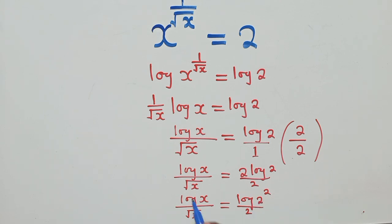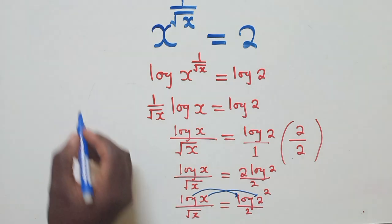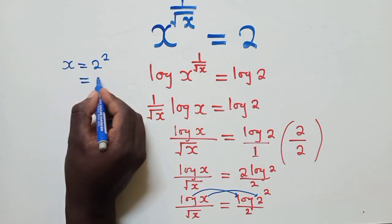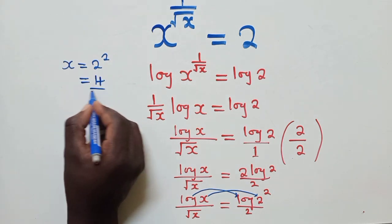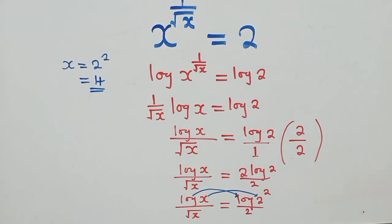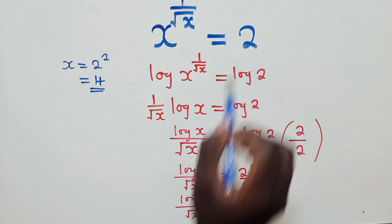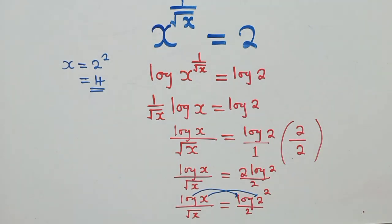We know that 2 to the power 2 is 4, so this log equals log 4. Since the logs are equal, x equals 2 to the power 2, which means x equals 4. One solution is x equals 4 — when we put 4 in, our answer equals 2.